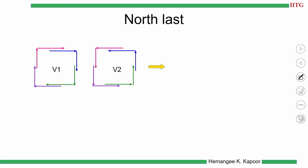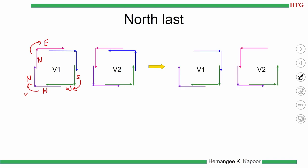North-last says you should go north at the end if at all you want to go north. The green turn (south then west) is fine — north is not touched. The purple turn (west then north) is permitted since north comes last. The pink turn (north then east) is not permitted since north happens first. In V1 the pink turn is prohibited; in V2 the blue turn in the top right corner is prohibited.